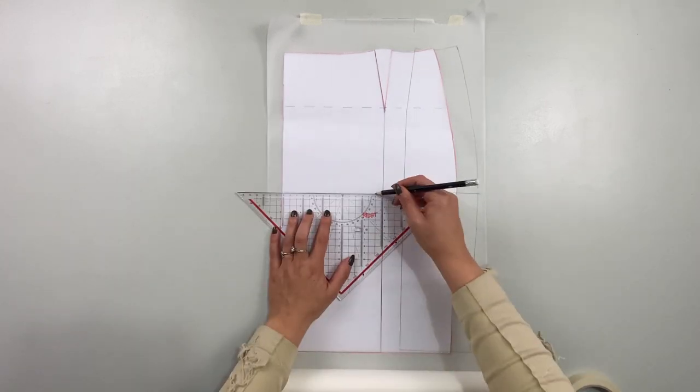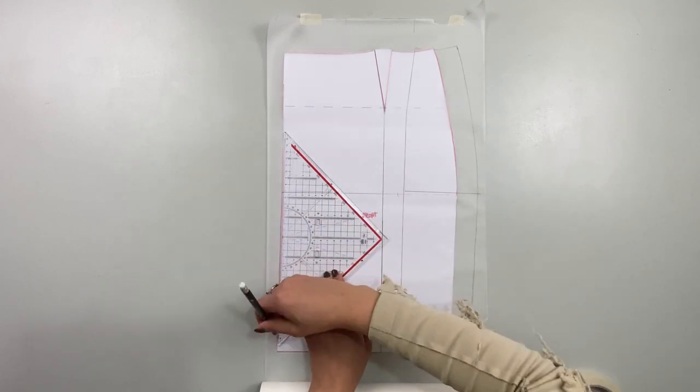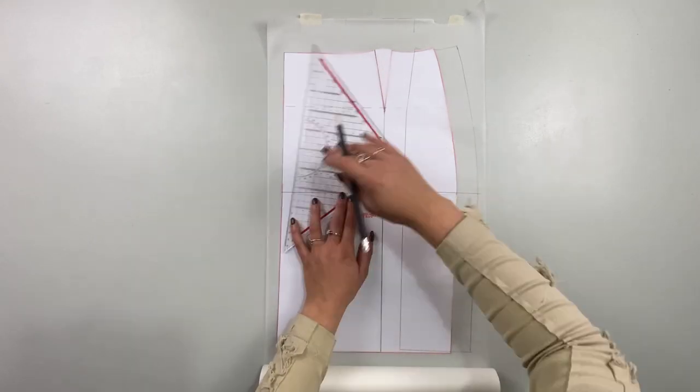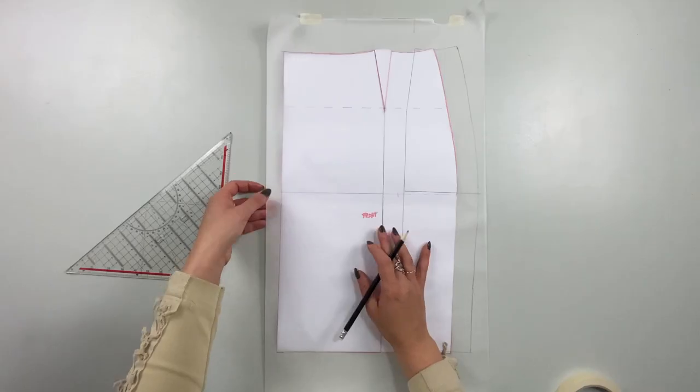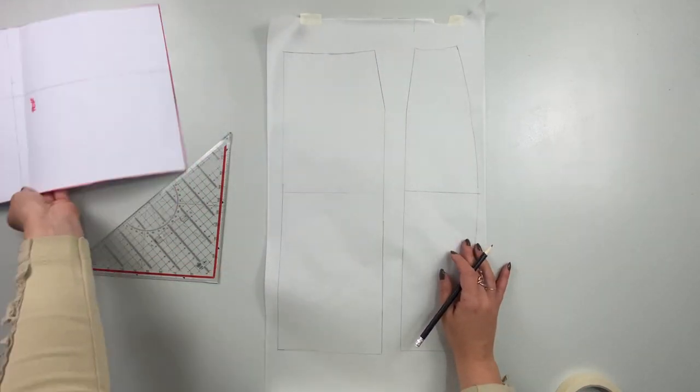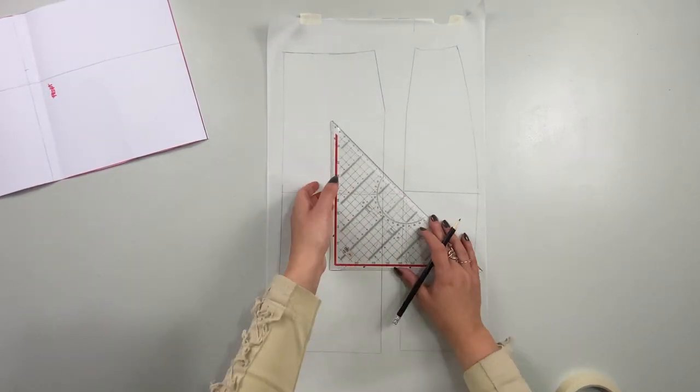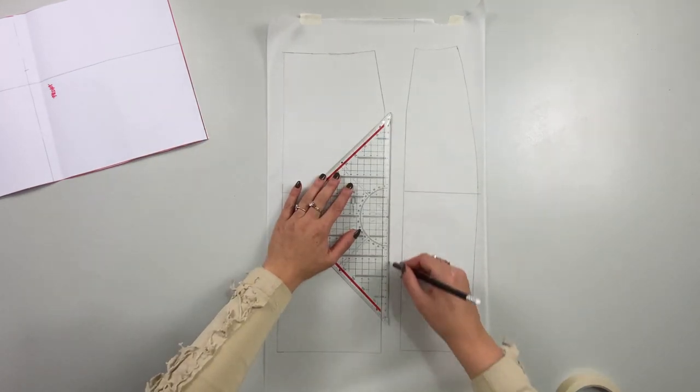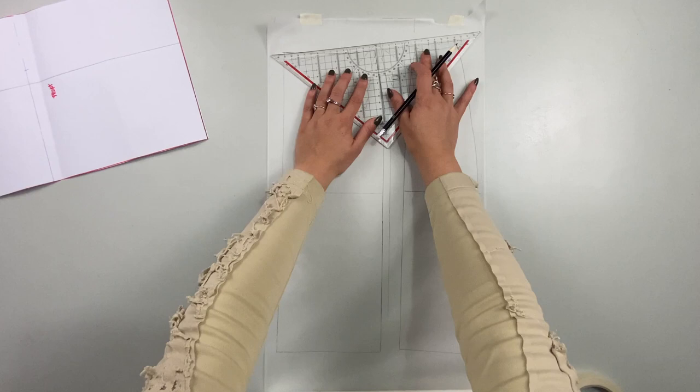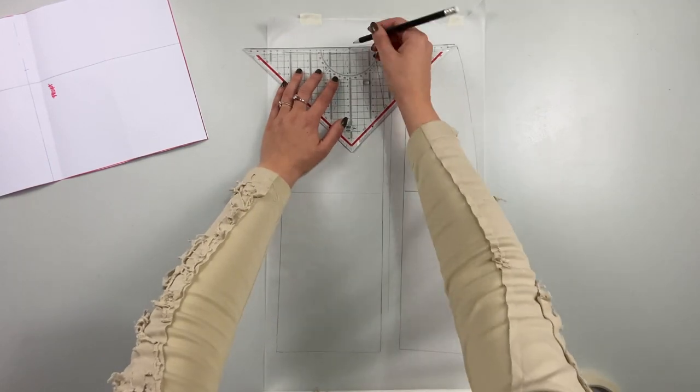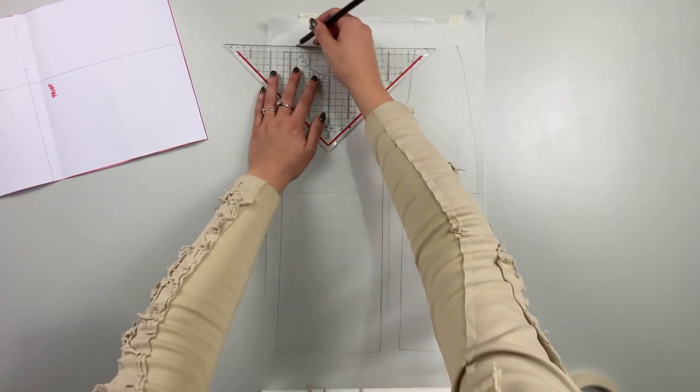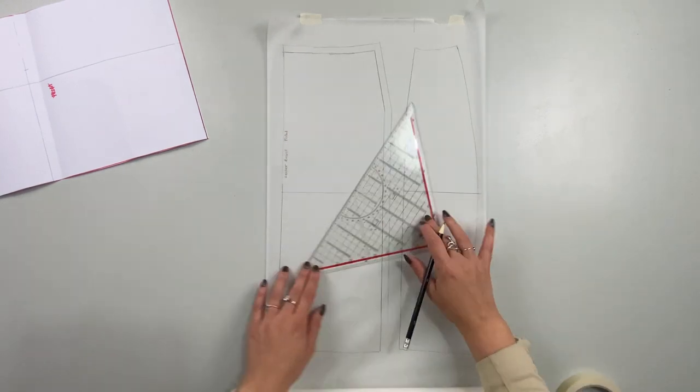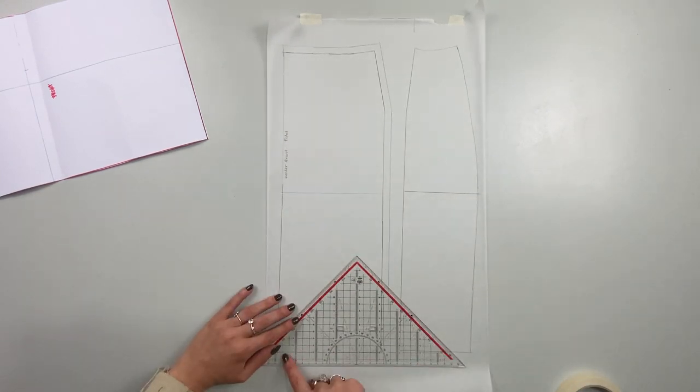If you have no idea what I mean by seam allowance, please don't hesitate and watch my video about different seams. After that I remove the original pattern from underneath the transparent paper and add the one centimeter seam allowance all the way around except on the center front of the skirt. That's where we won't have a seam, but instead we cut out that pattern piece right on the fold of the fabric.